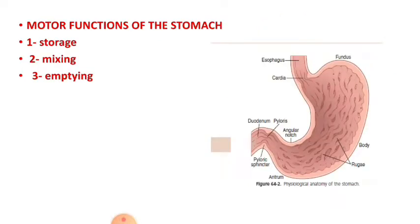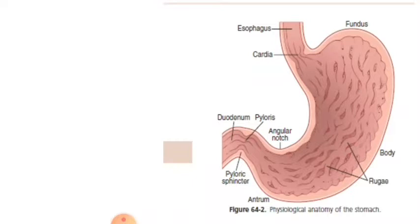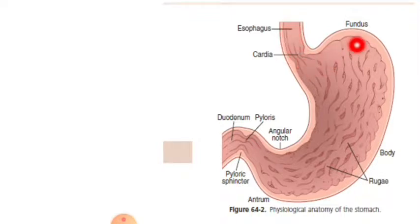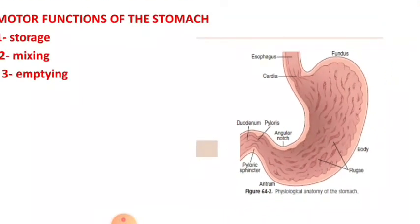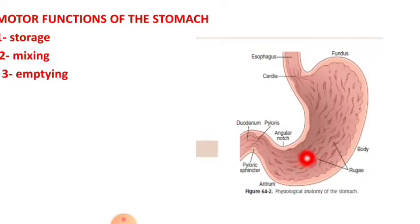The second part is the stomach. We will discuss the motor function of the stomach, but first we will review the anatomy. The stomach has the cardia — the junction between the esophagus and the stomach — the fundus, the body, and the last part is the antrum. We also have the lesser curvature and the greater curvature. In physiology, the stomach consists of the body, the upper part called the antral portion, and the entrance to the pylorus called the pyloric end.